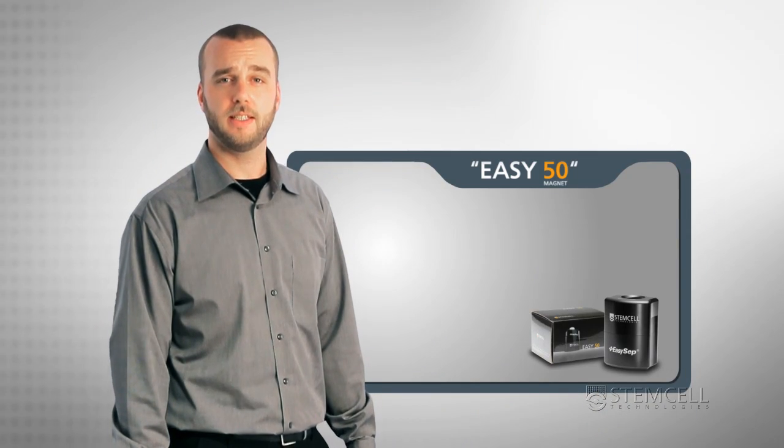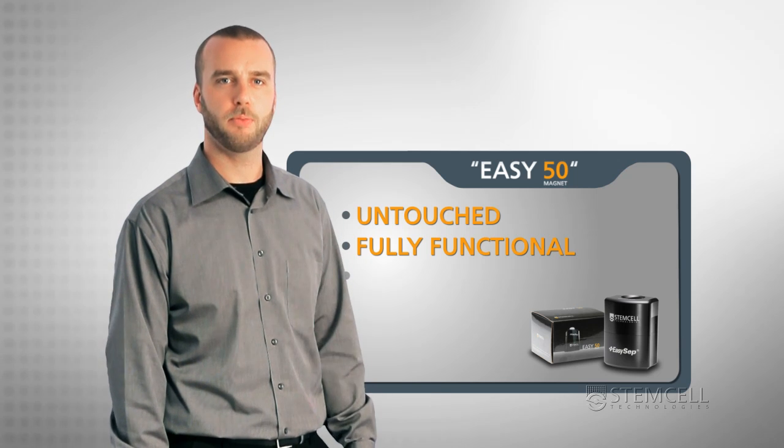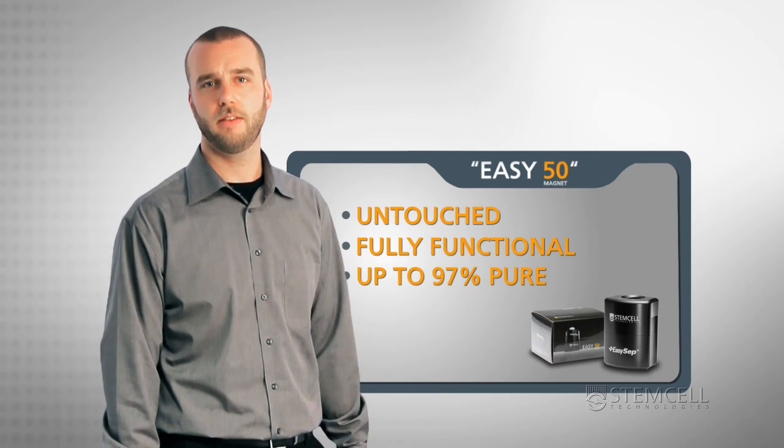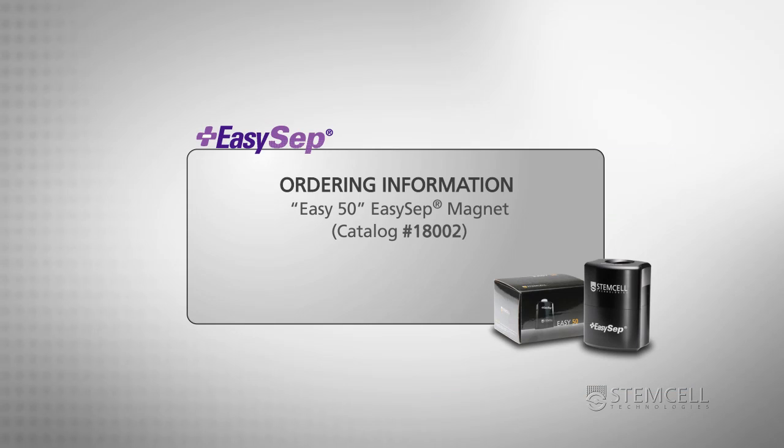Cells isolated with the EZ50 Magnet are untouched, fully functional and up to 97% pure. EZ50 provides you with a fast, reliable method for isolating cells from large sample volumes. For more information on the EZ50 Magnet, email us or visit our website at stemcell.com.